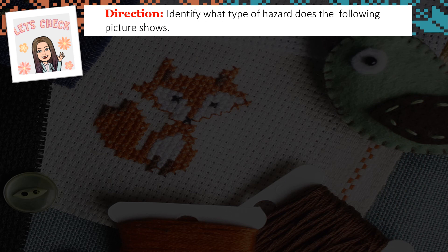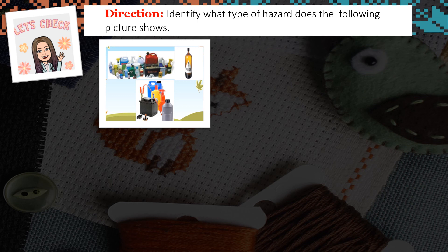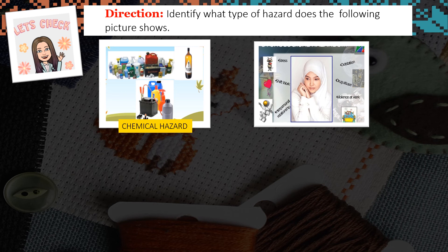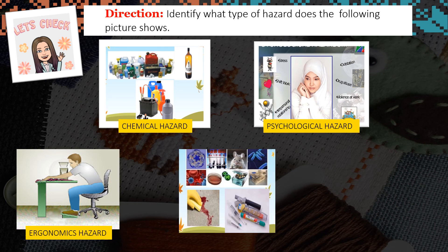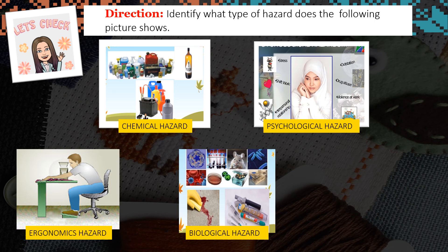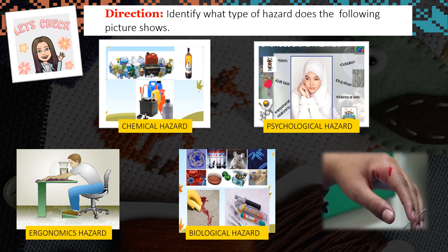Next direction: identify what type of hazard each picture shows. First picture — chemical hazard. Second picture showing distress, shift work, interpersonal relationship issues, violence at work — that is psychological hazard. Third picture showing wrong posture of a man — ergonomic hazard. Fourth picture — biological hazard. Fifth picture — physical hazard.